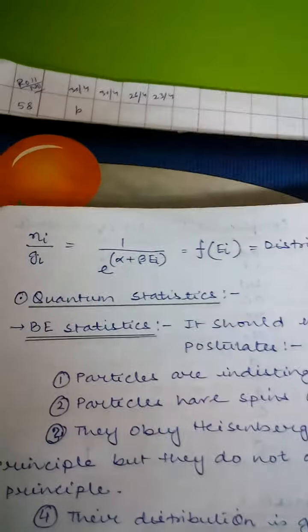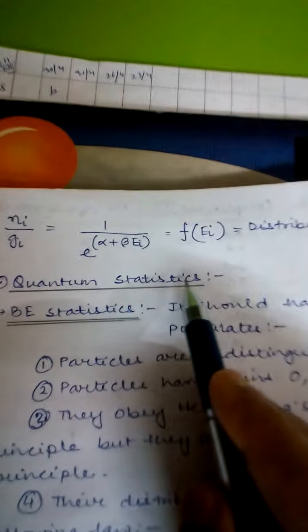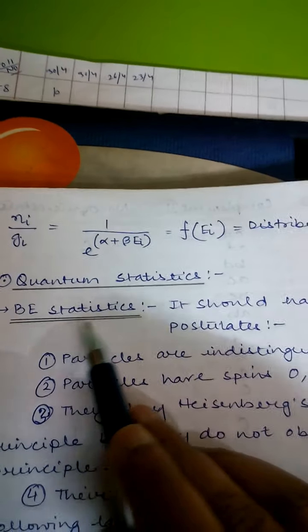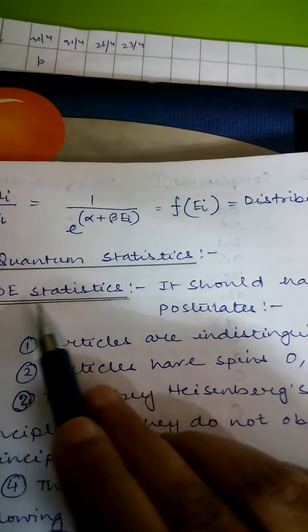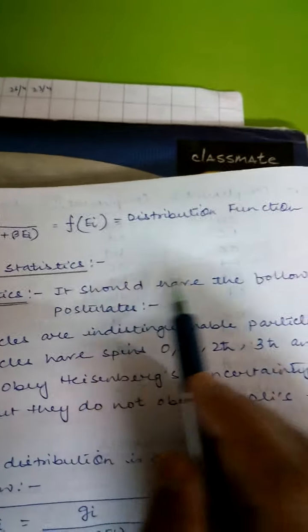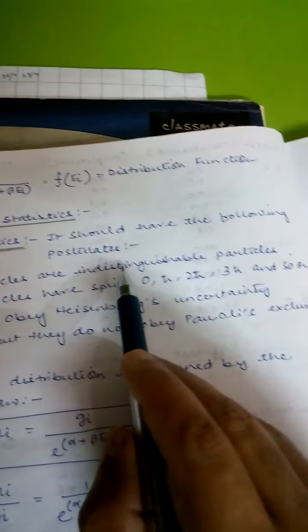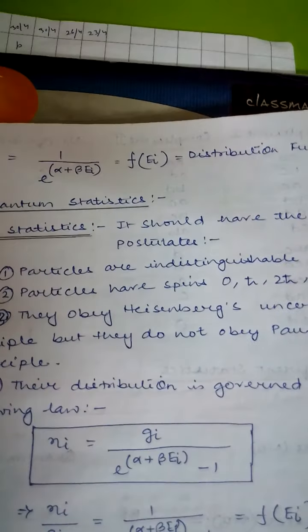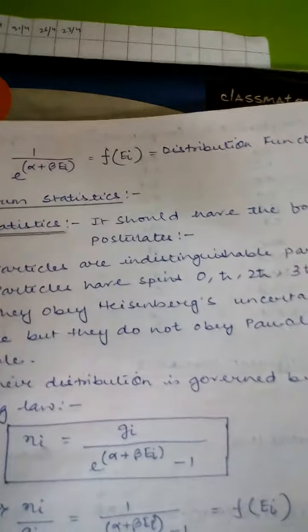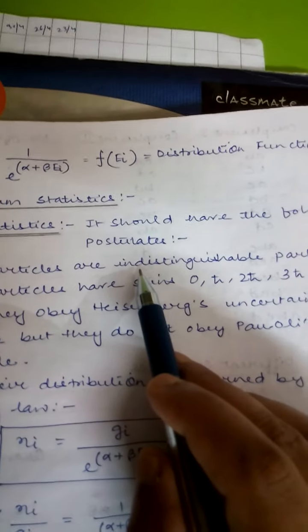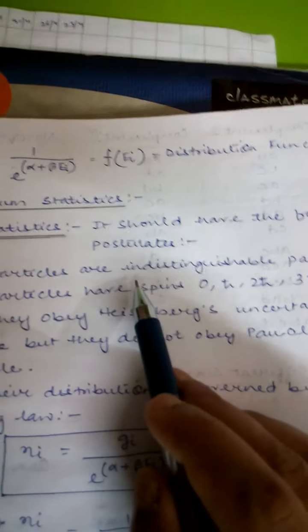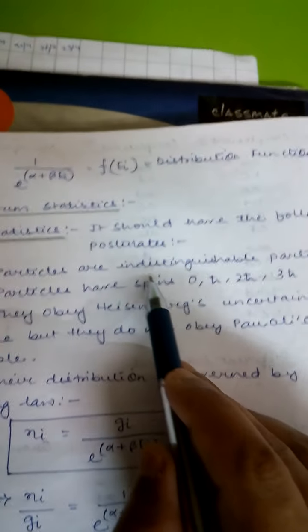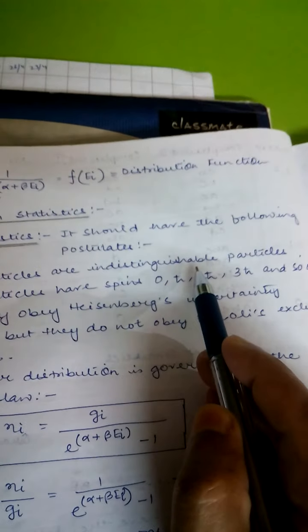Now our next topic is quantum statistics. The first part of quantum statistics is BE statistics or Bose-Einstein statistics. Its first postulate is that particles are indistinguishable — this is a key difference from classical statistics, where particles were distinguishable. Here in quantum statistics, particularly BE statistics, particles cannot be distinguished.